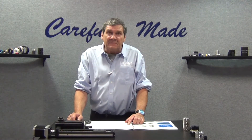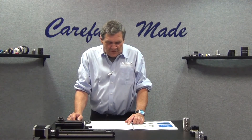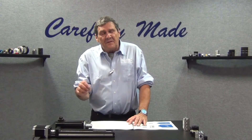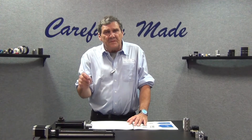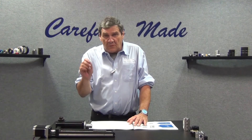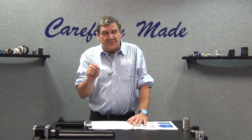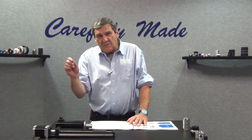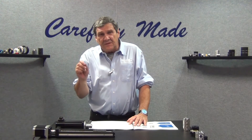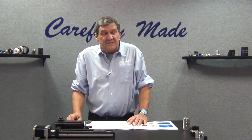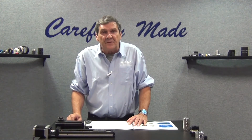The misalignment requirements — parallel misalignment, angular, axial misalignment — identifying the types of misalignment that you're trying to correct with the coupling, and the amount of each, is going to steer us to choosing and suggesting the correct coupling to handle the degree of misalignment that you've got in your system.